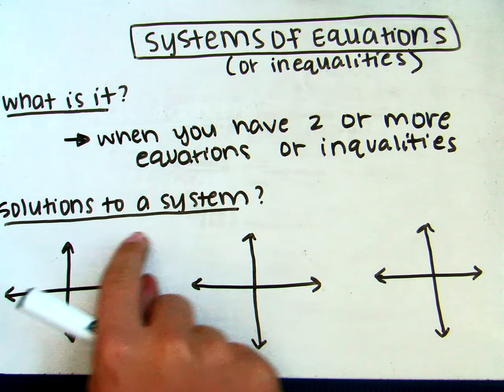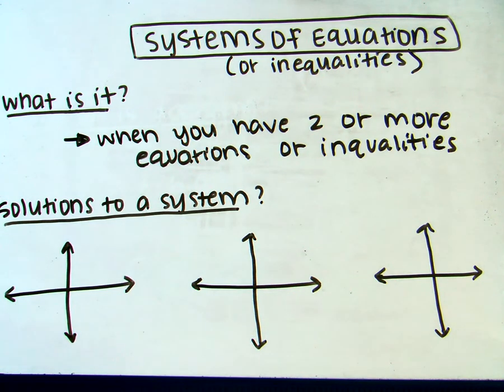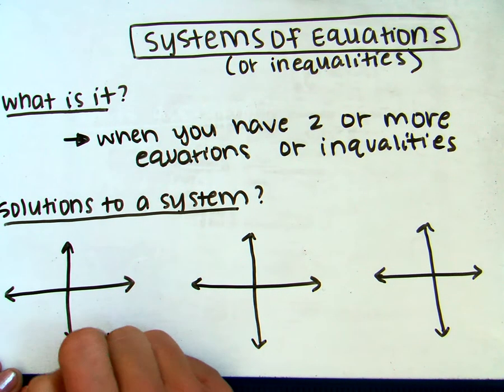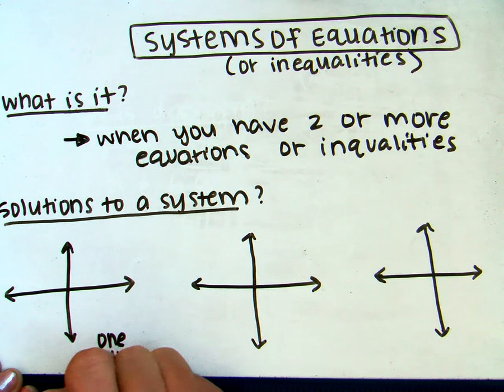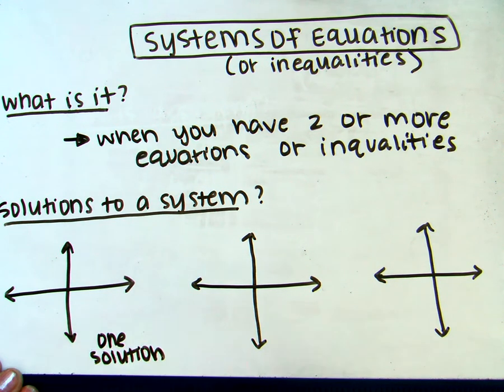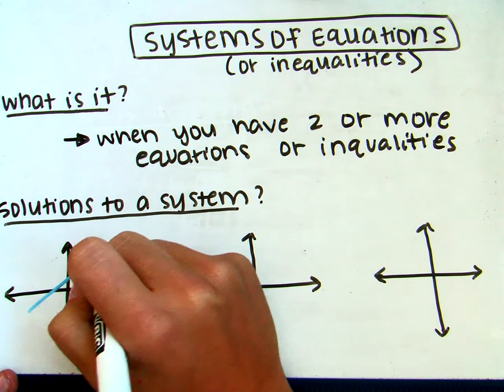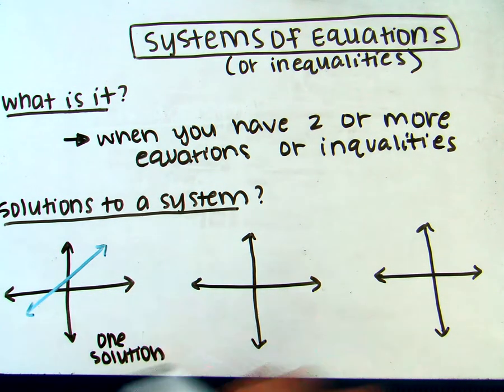Whenever you're trying to find the solutions of a system, there's three different things that could happen. The first thing that could happen is you have exactly one solution. How that would look is if you had one graph, so you had one line right there, and then you had another line that intersects